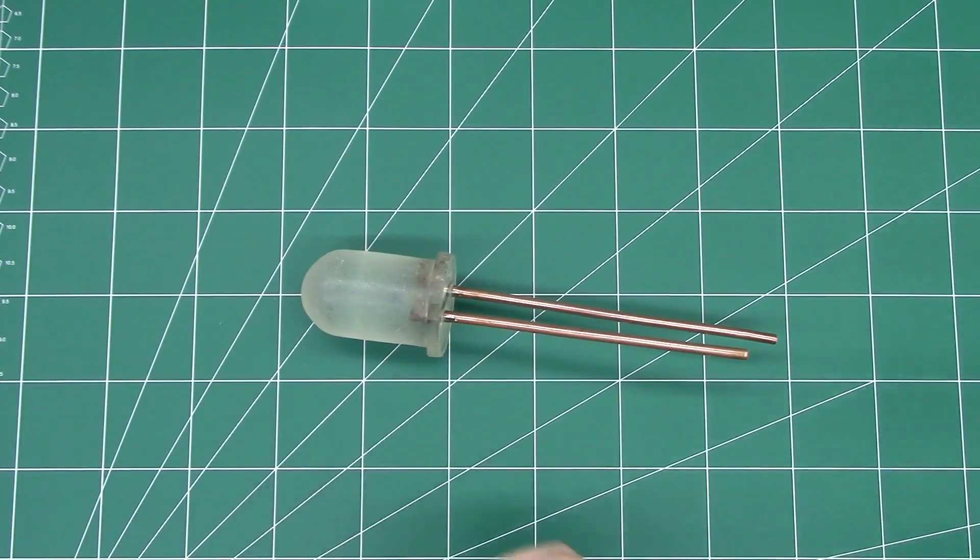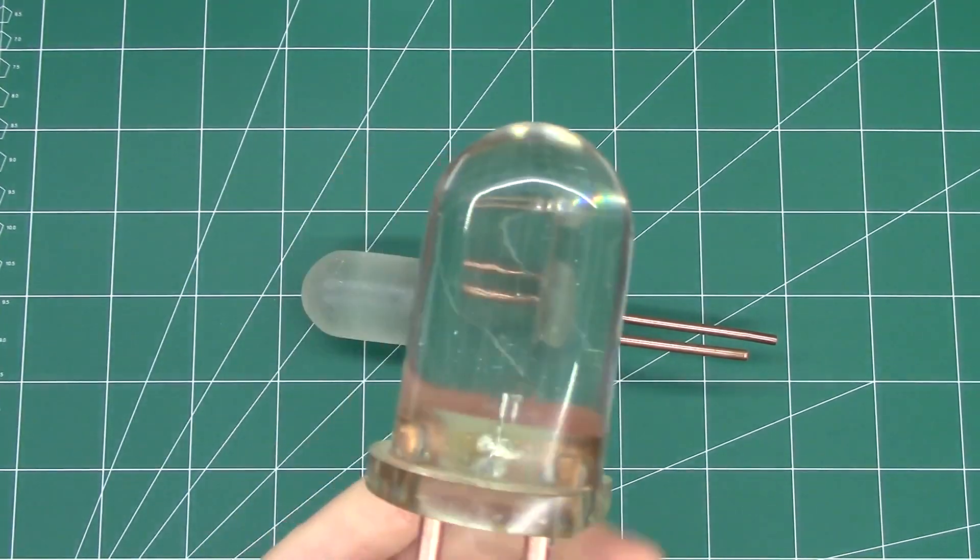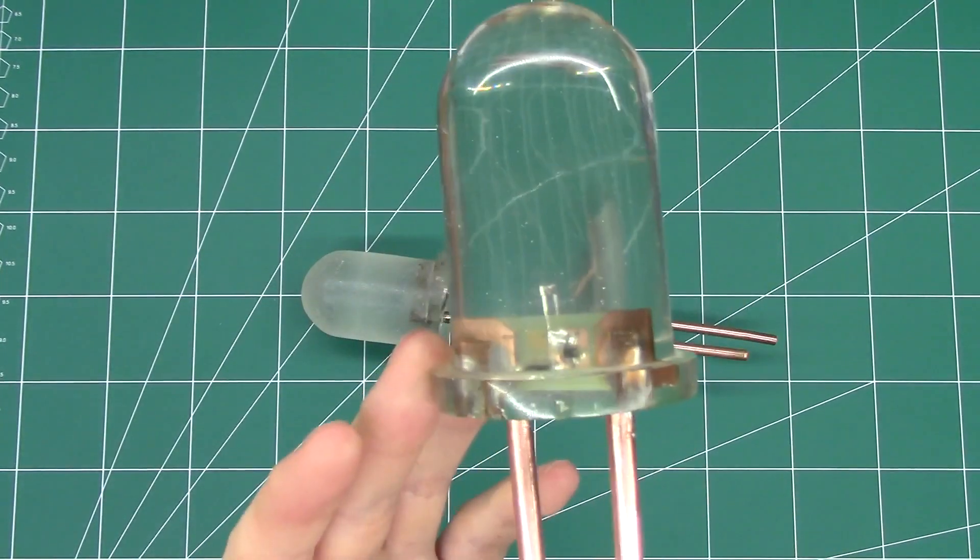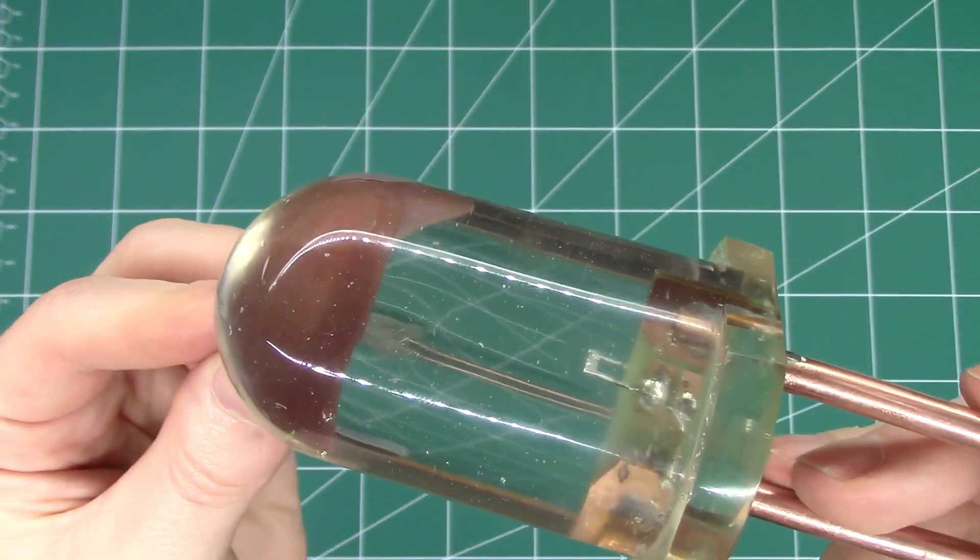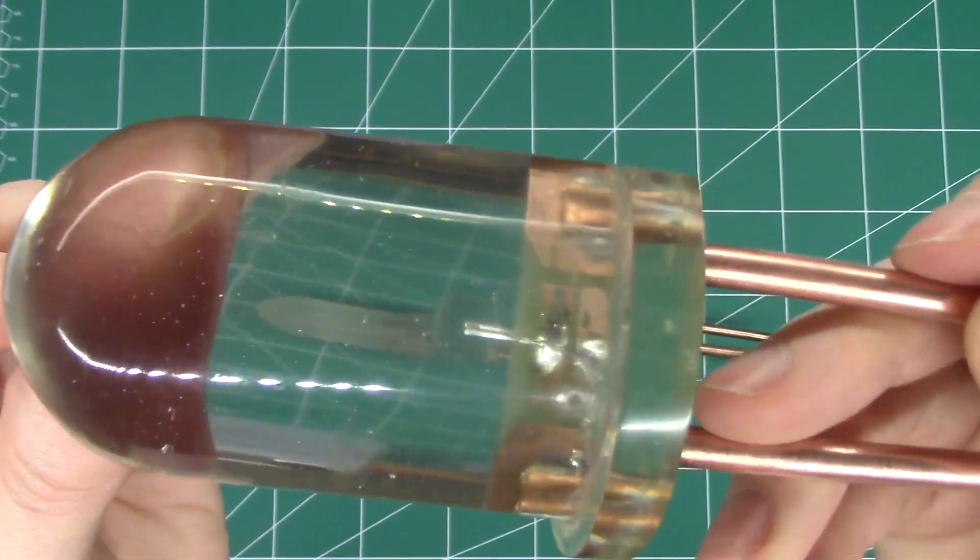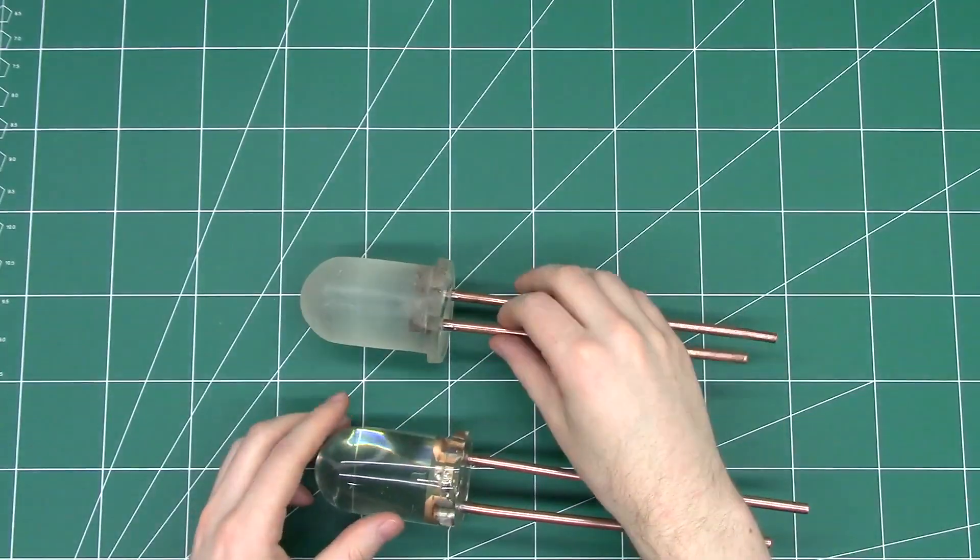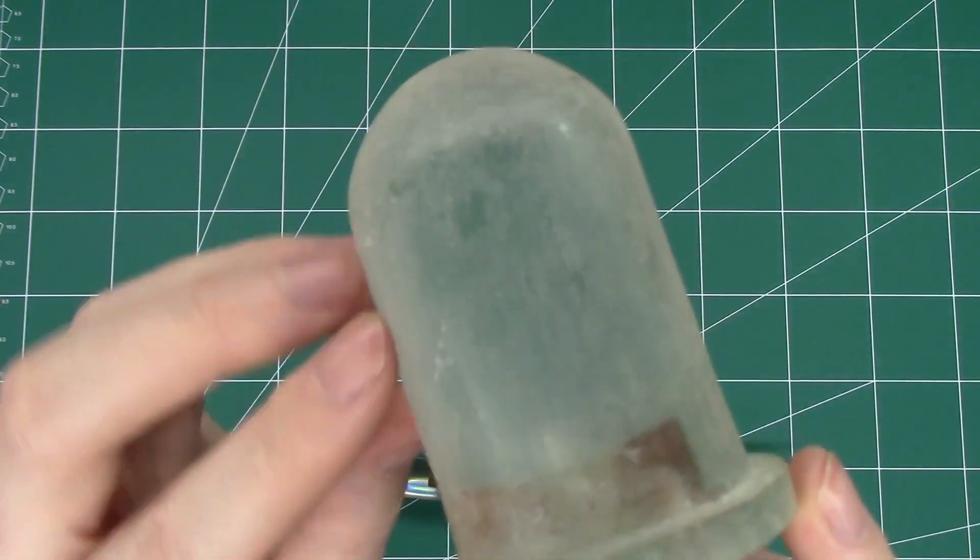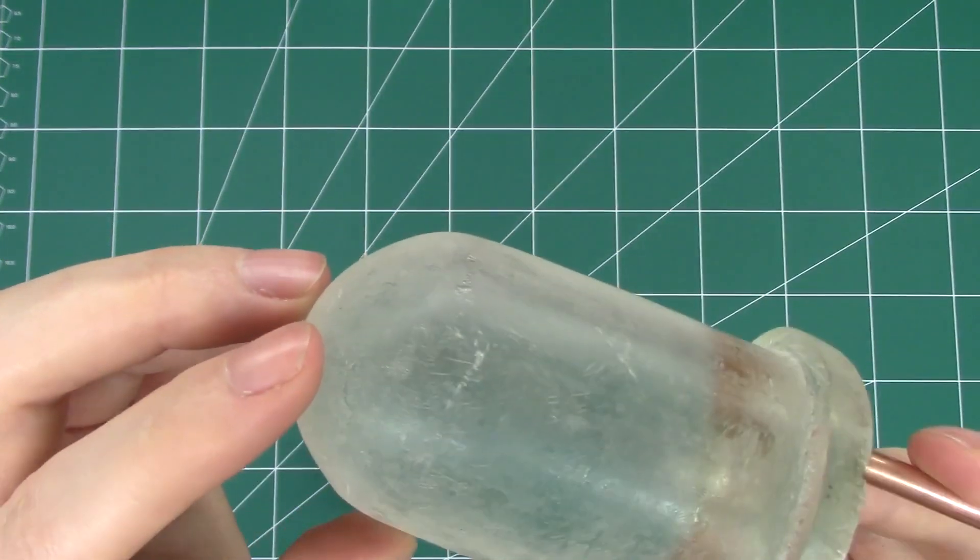And while I was taking that LED apart I took another one and I actually sanded it down to a really high grit and then a kind of cutting compound. So here you can see the inside of one of the LEDs.